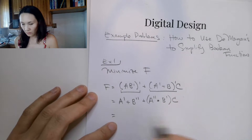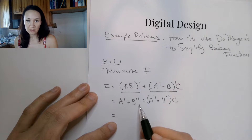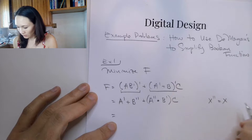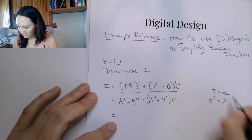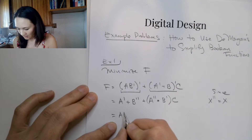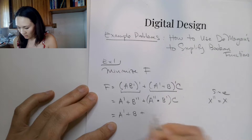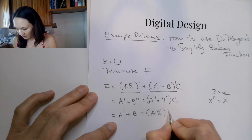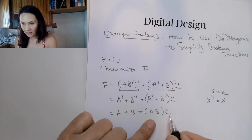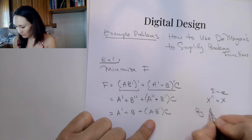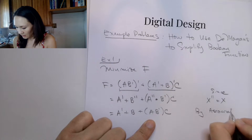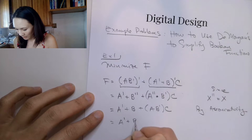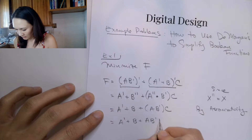What else can we do to simplify? We know that if we double-NOT something, that just becomes the original. Since x'' = x, I can write the next line. This is equivalent to a' OR b, OR a AND b', ANDed with c. Since ANDing is associative, by associativity this can be written as a' OR b OR a·b'·c.